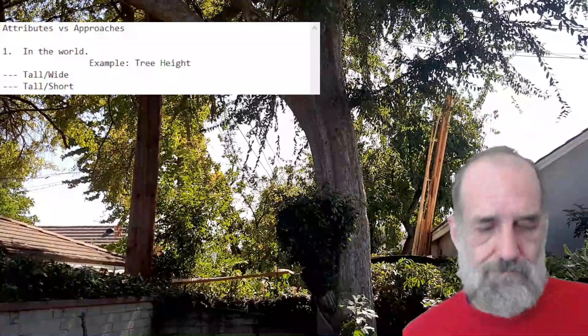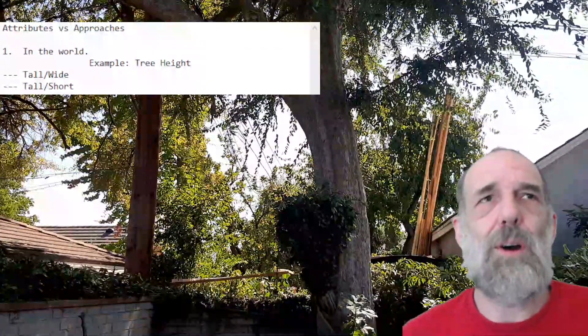We also have tall short. Now, to the extent a tree is tall, it is not short. To the extent a tree is short, it is not tall. These are inversely proportional attributes. And that's a different relationship between the attributes than between tall and wide.